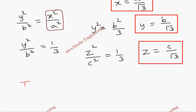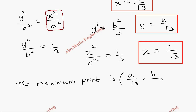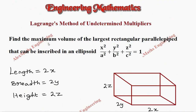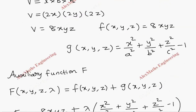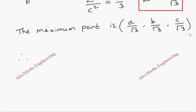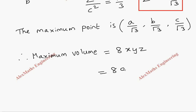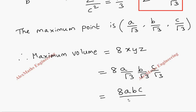Therefore, the maximum point is (a/√3, b/√3, c/√3). Since the question asks for the maximum volume, we substitute x, y, z into the volume formula 8xyz. Maximum volume = 8·(a/√3)·(b/√3)·(c/√3) = 8abc/(3√3) cubic units. So we have found the maximum volume.